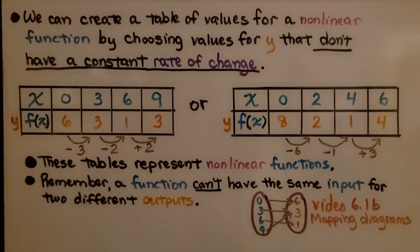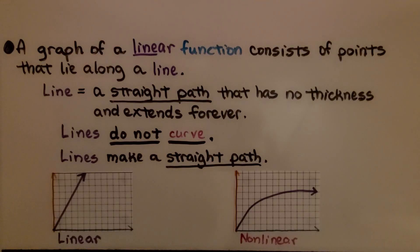A graph of a linear function consists of points that lie along a line. The definition of a line is a straight path that has no thickness and extends forever. Lines do not curve. Lines make a straight path, so this would be linear. This is nonlinear because it's curved.